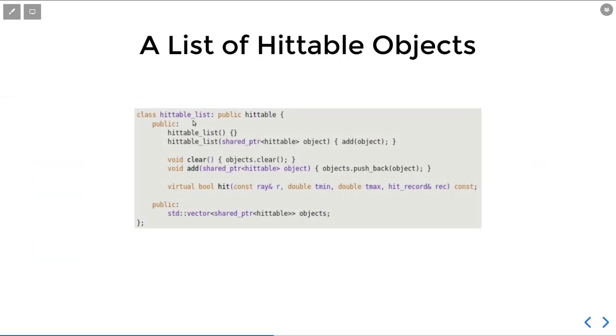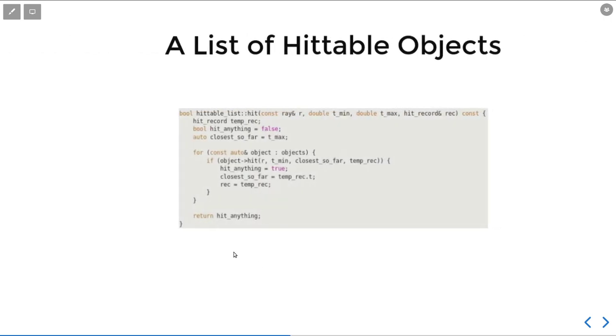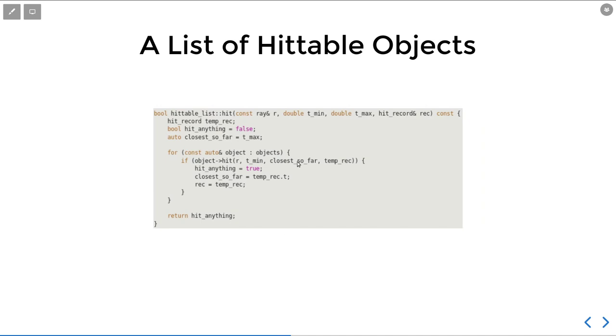Then after all those infrastructures, we can finally have a hittable list that is represented by a vector of pointers to hittables. We need pointers because of inheritance. And when we actually do the list intersection test, we just loop through all the objects inside the list to find the closest hit.